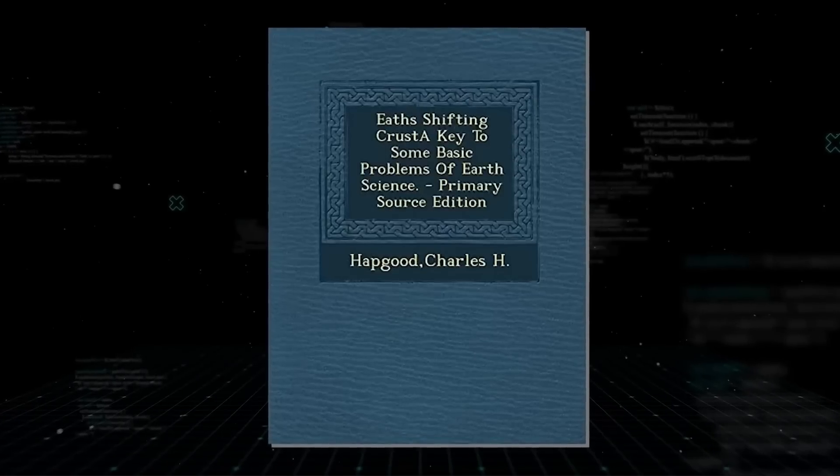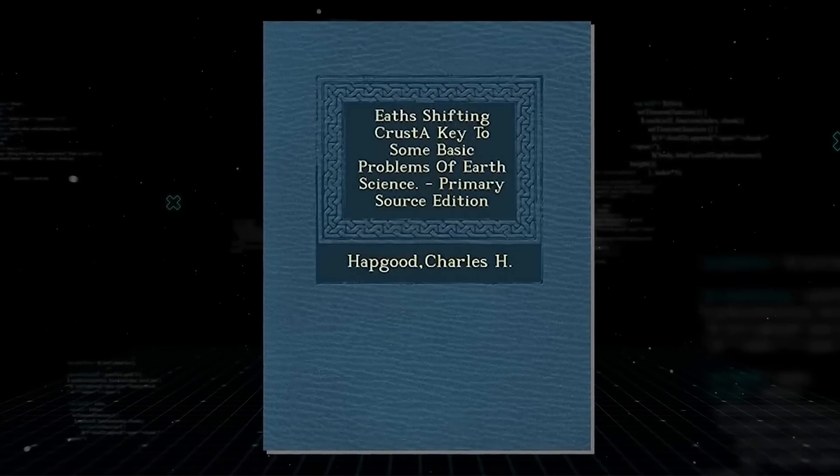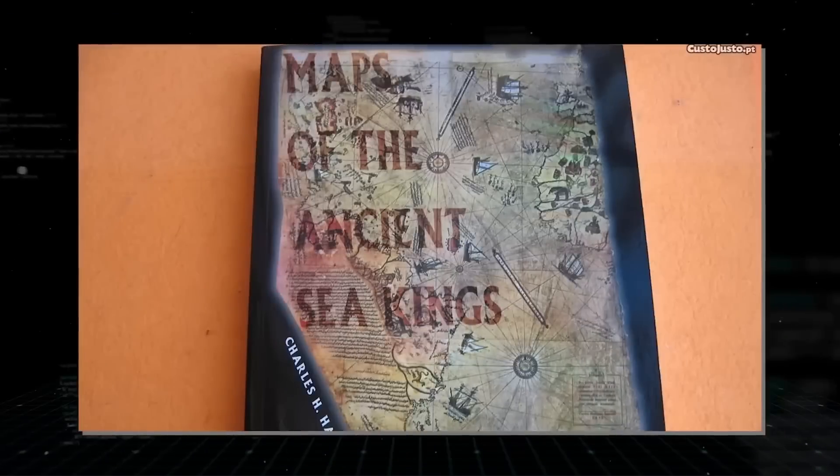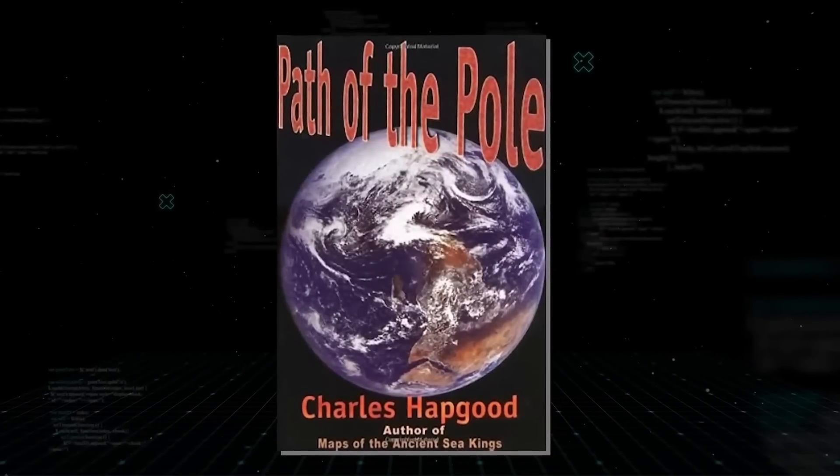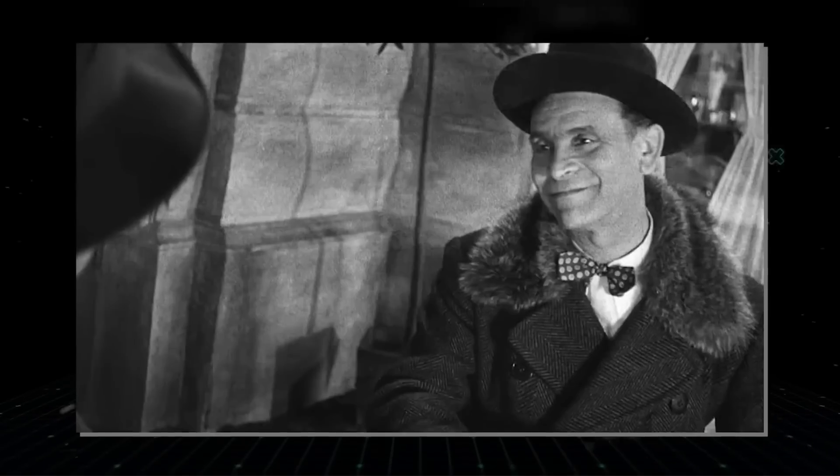One of the most well-known advocates of the pole shift theory was Professor Charles Hapgood. Although he wrote several books on the subject, including Earth's Shift in Crust, Maps of the Ancient Sea Kings, and Path of the Pole, he often contradicted himself in terms of how quickly a pole shift could be catastrophic.